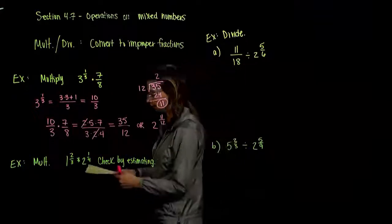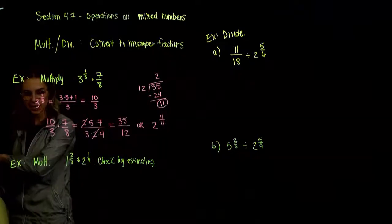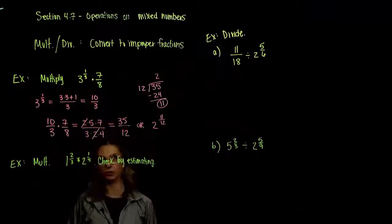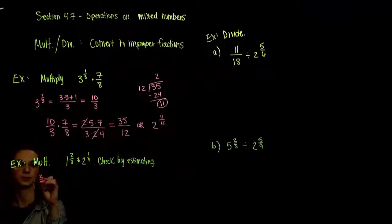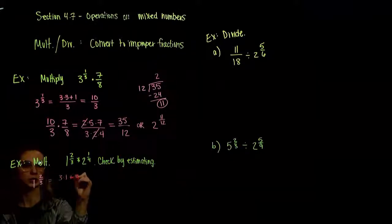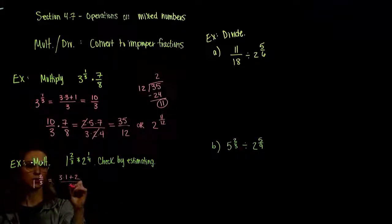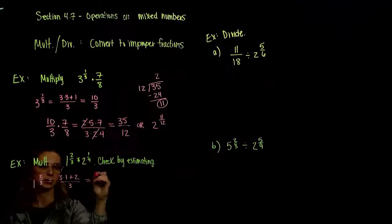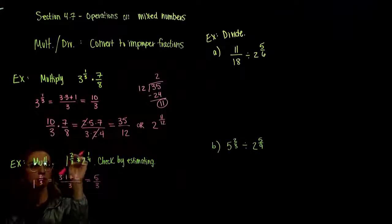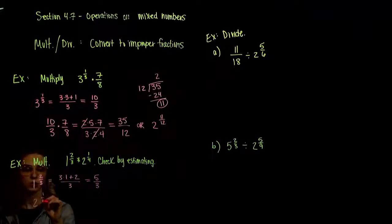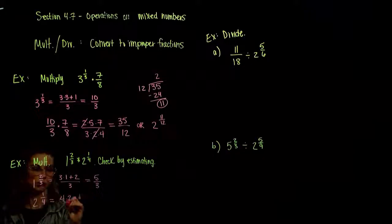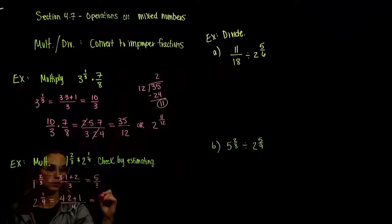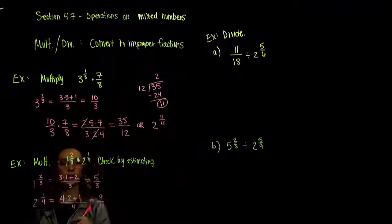Let's do that again for this second problem. We want to multiply one and two-thirds times two and one-fourth. Taking them individually: for one and two-thirds, three times one plus two all over three gives us five-thirds. For two and one-fourth, four times two plus one all over four gives us eight plus one, which is nine-fourths. So we have our equivalencies in terms of improper fractions.